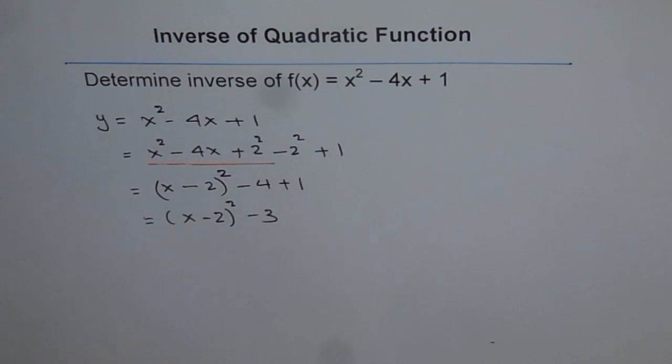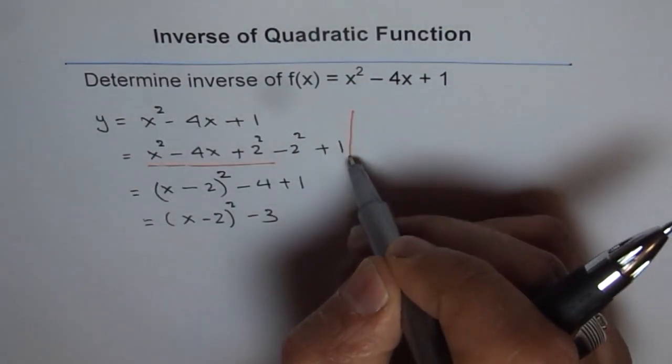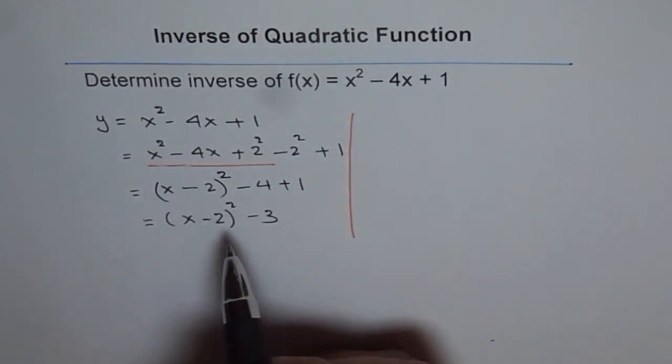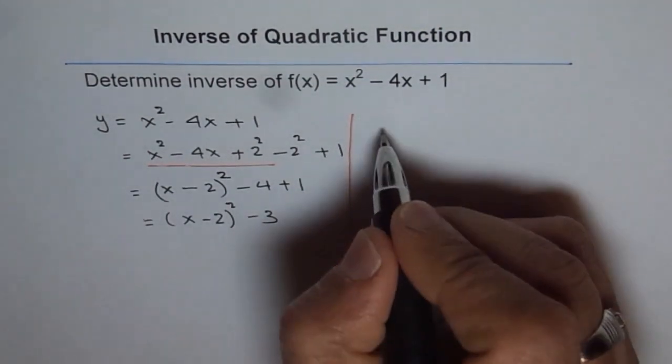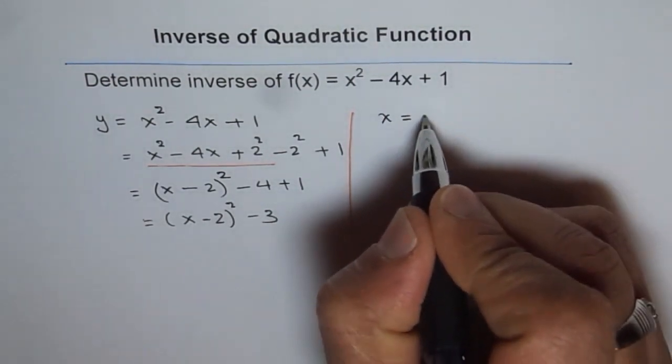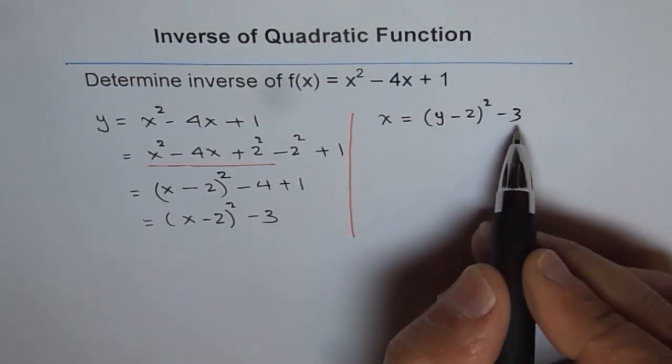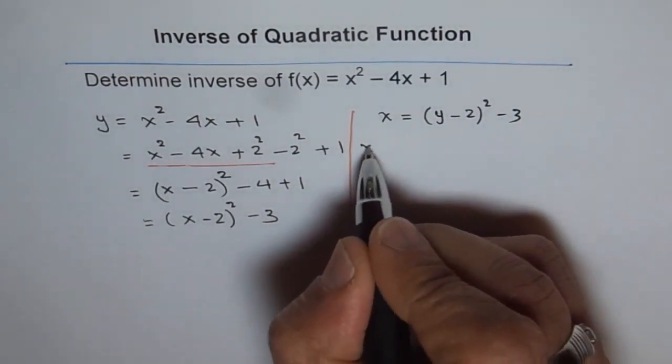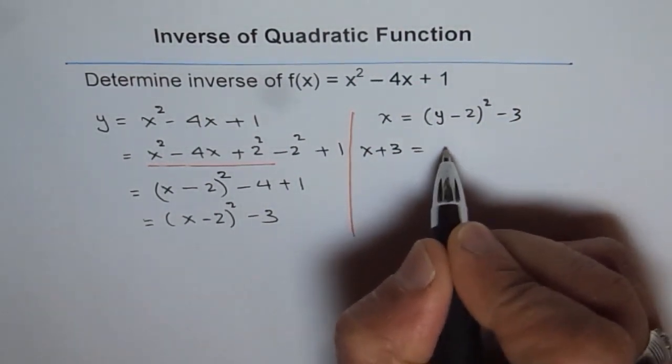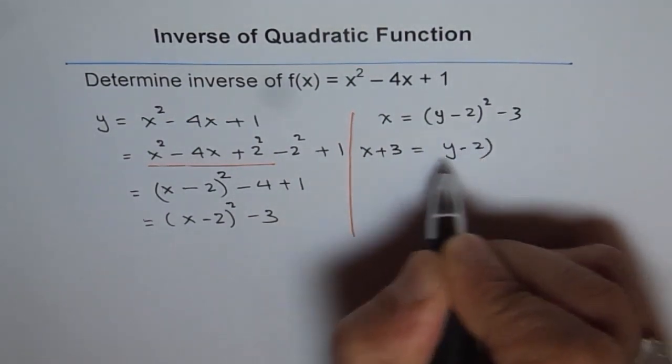Now we should start the process of finding inverse function. So let's swap and solve. So what we will do now is we will interchange x and y. And so we get x = (y - 2)² - 3. Now we will bring 3 this side. So we get x + 3 = (y - 2)².